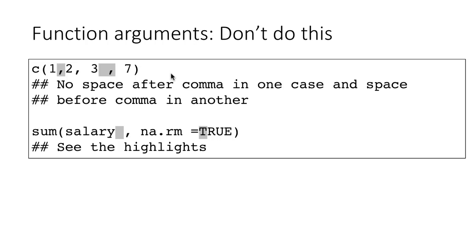Here are examples that violate our convention. For instance, no space after the first comma and a space after the second comma — both violate the convention. Also, a space before the comma violates the rule of no space before and one space after. And here, not having a space after the equals sign violates the convention of surrounding operators with one space. If you follow these conventions, for the most part everything will work correctly.